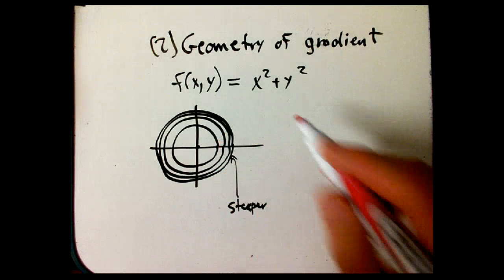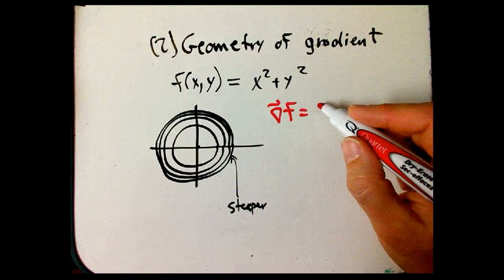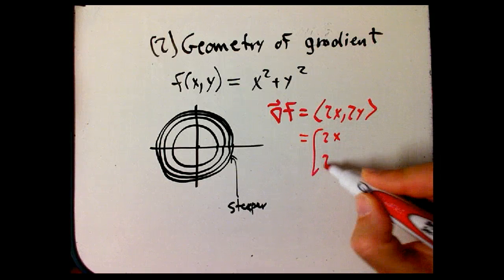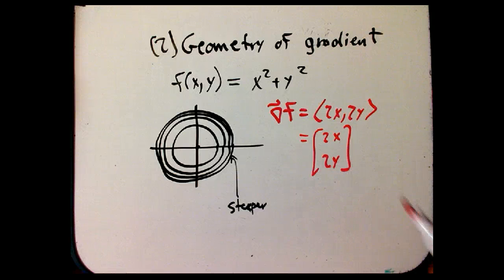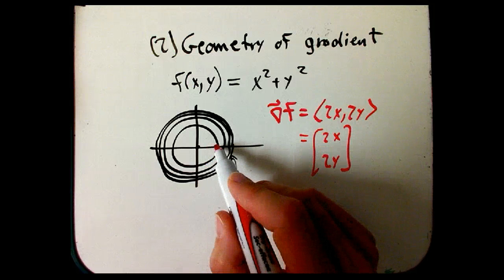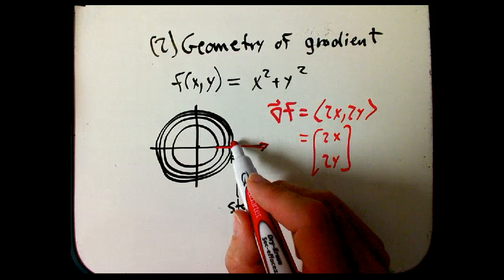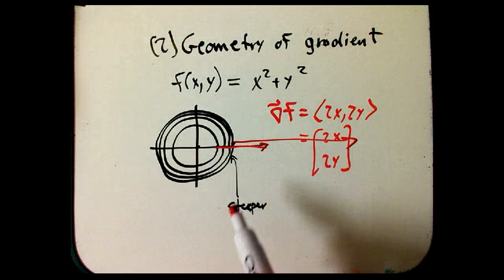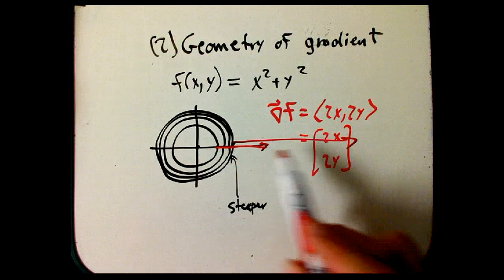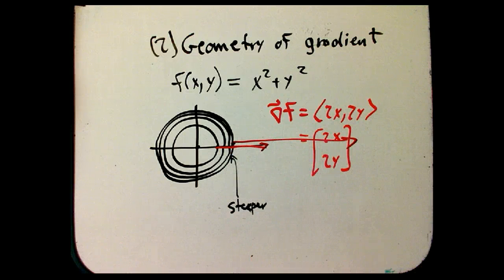But what happens to the gradient vector? We get bigger. The gradient here is 2x, 2y, or I really should be writing it as a column vector if I'm thinking of it as a vector field. And that gets bigger. And it's a little bit odd that the spacing gets smaller when the arrows get bigger. It would be more natural if as the spacing got smaller, the arrows got smaller. But it seems backwards.